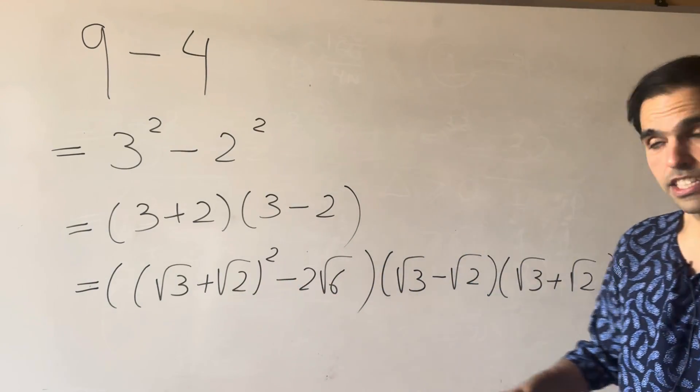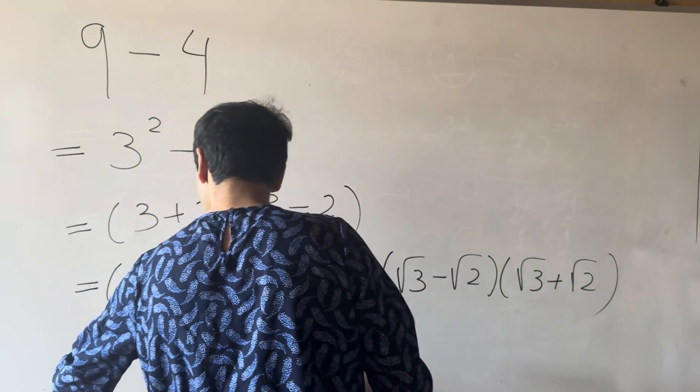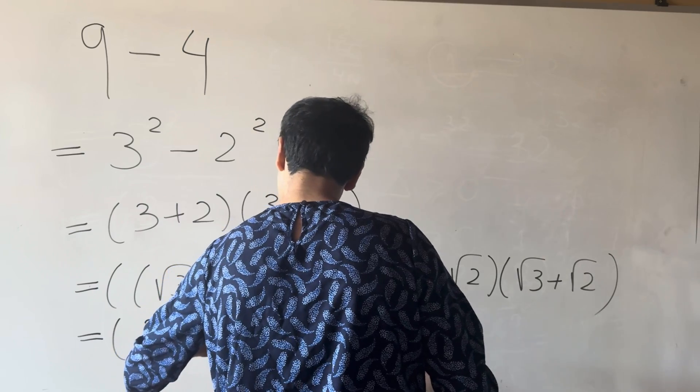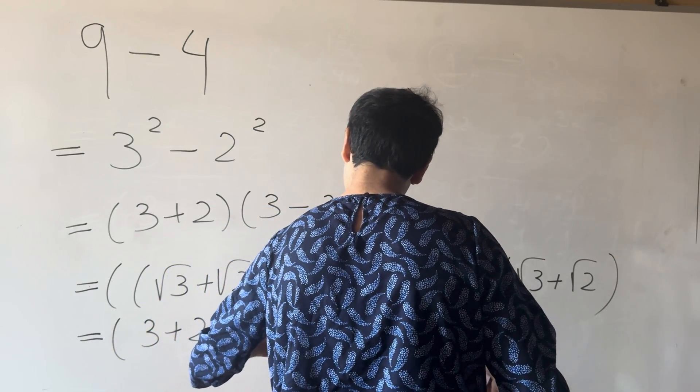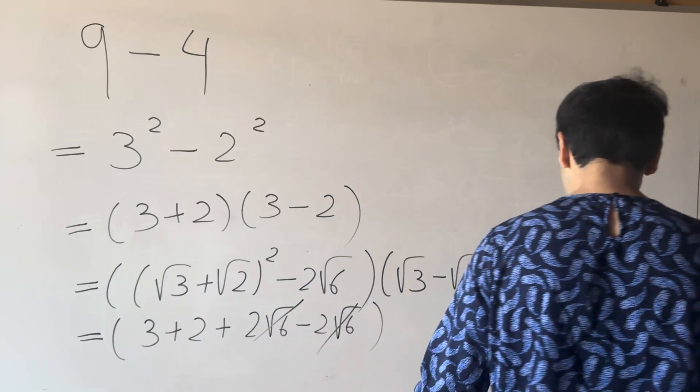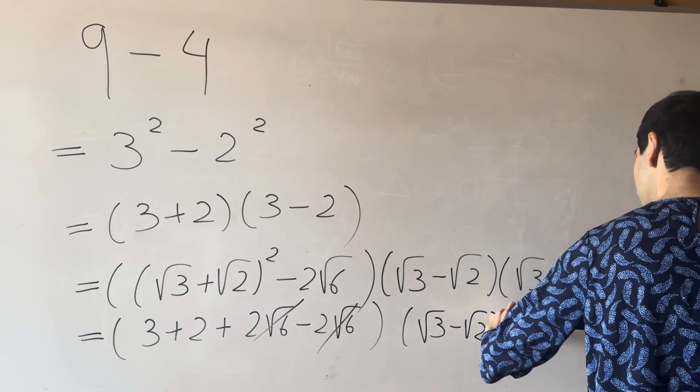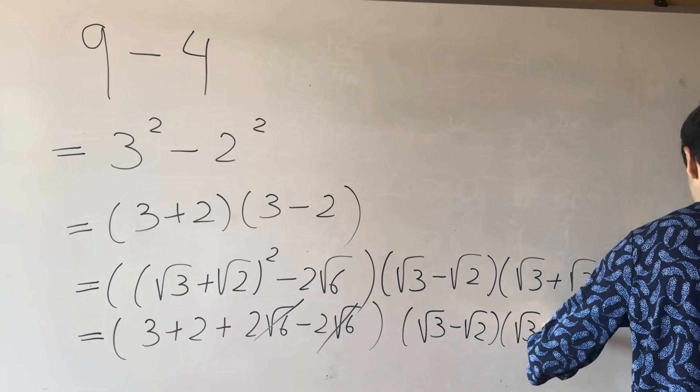And now here we can expand all this square. So what we get is 3 plus 2 plus 2 square root of 6 minus 2 square root of 6. This cancels out. And then times square root of 3 minus square root of 2 times square root of 3 plus square root of 2.